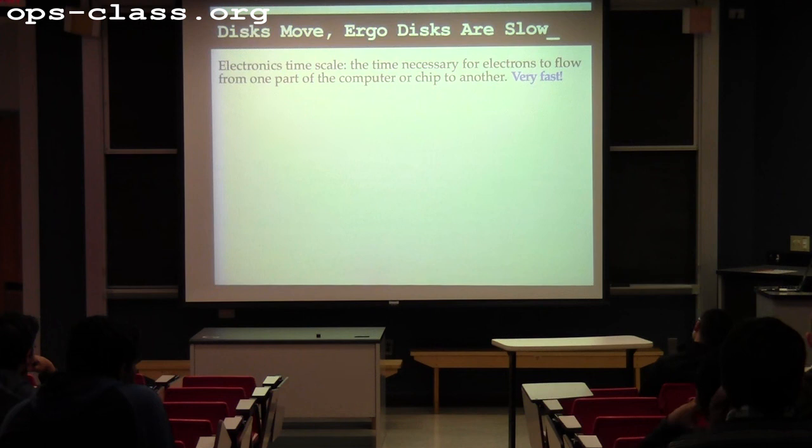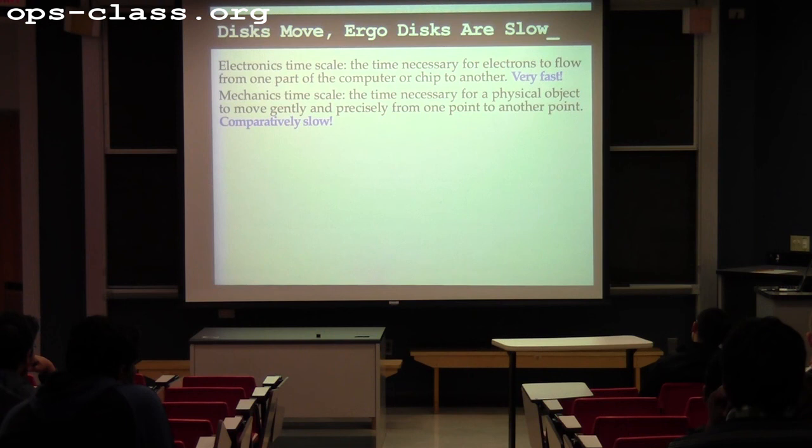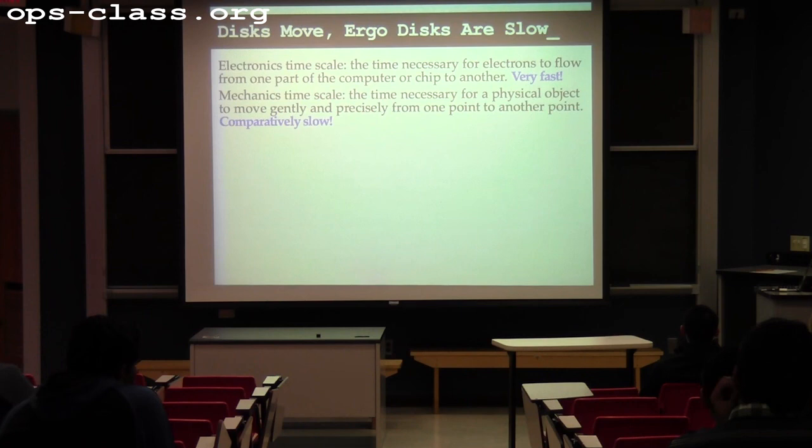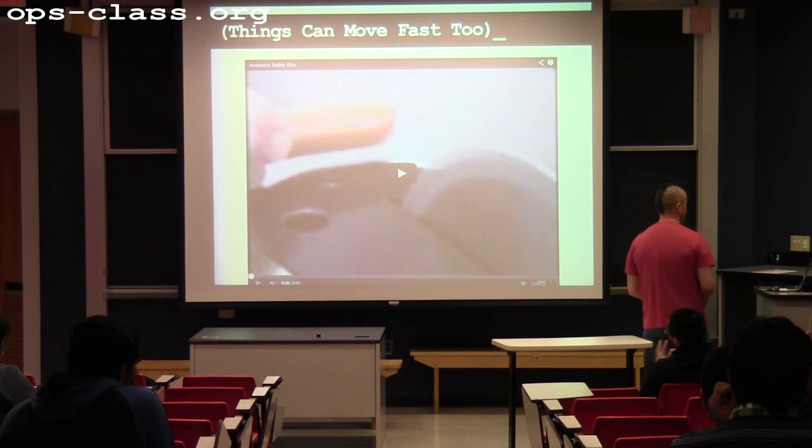When we're talking about memory, we're talking about electrons flowing from one part of the system to another — electronics timescale. On the mechanical timescale, we're talking about the time the disk needs to throw the heads an inch in a certain direction, then stop and hold yourself very still to read data.